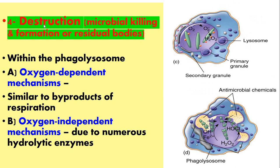Number four: destruction — microbial killing and formation of residual bodies. Within the phagolysosome, there are two mechanisms for microbial killing. Number A: the oxygen-dependent mechanism, as in figure C, similar to a byproduct of respiration. Number B: the oxygen-independent mechanism, as in figure D, due to numerous hydrolytic enzymes.